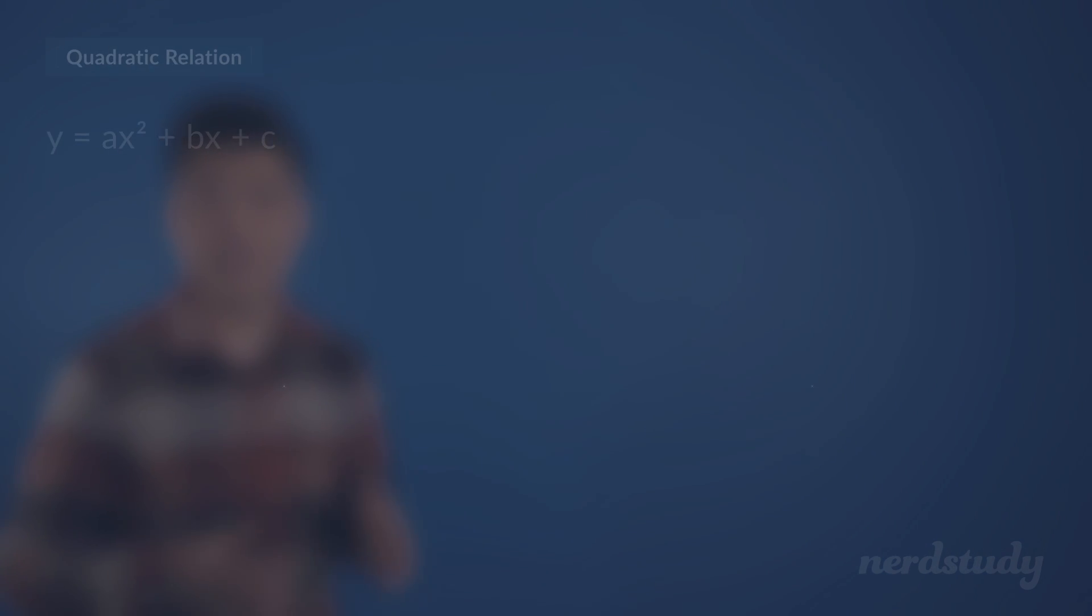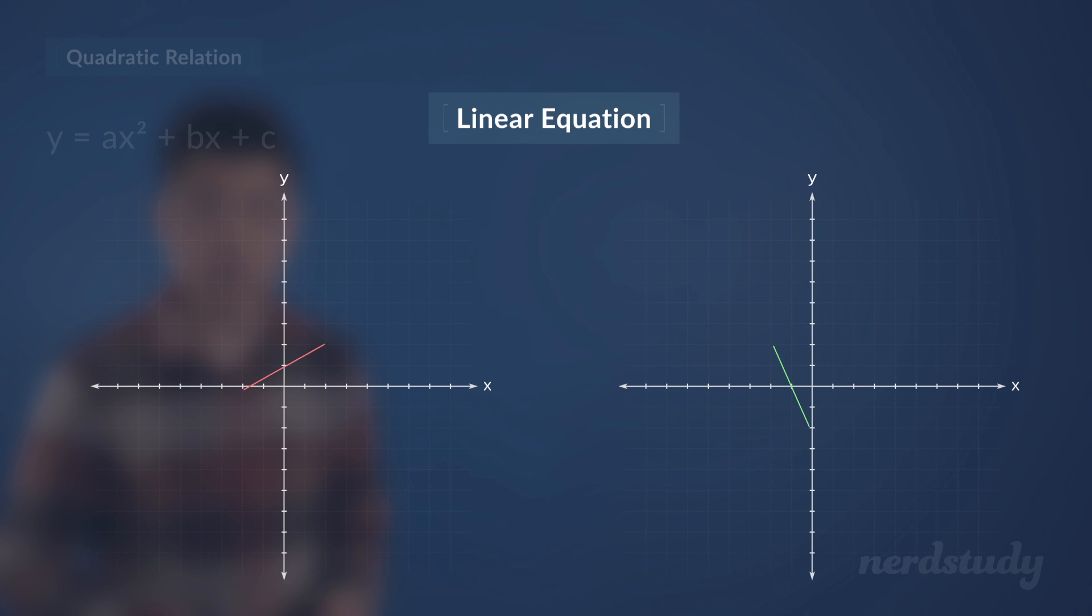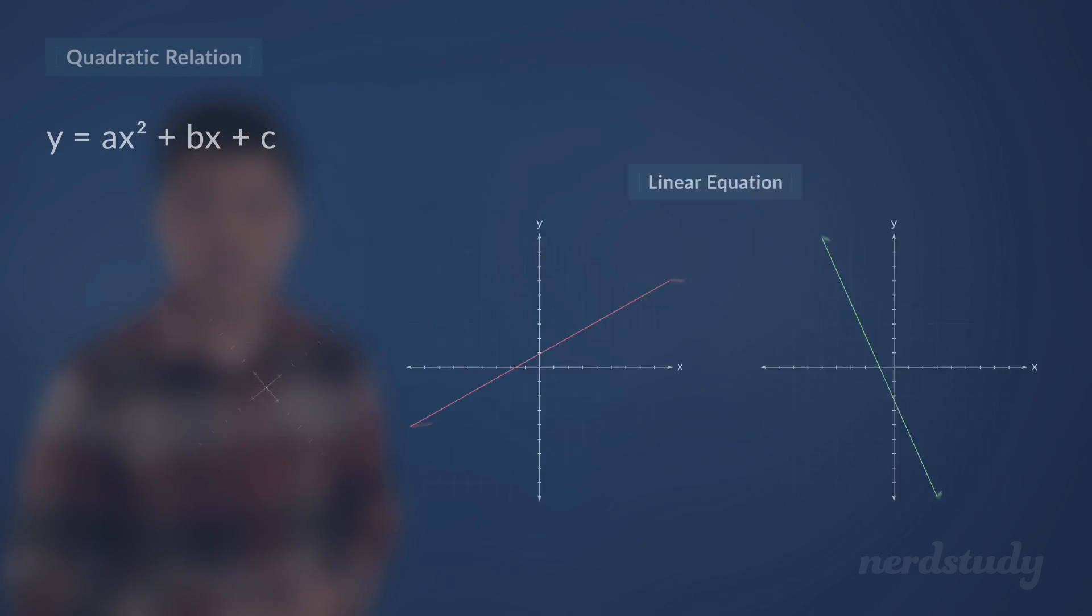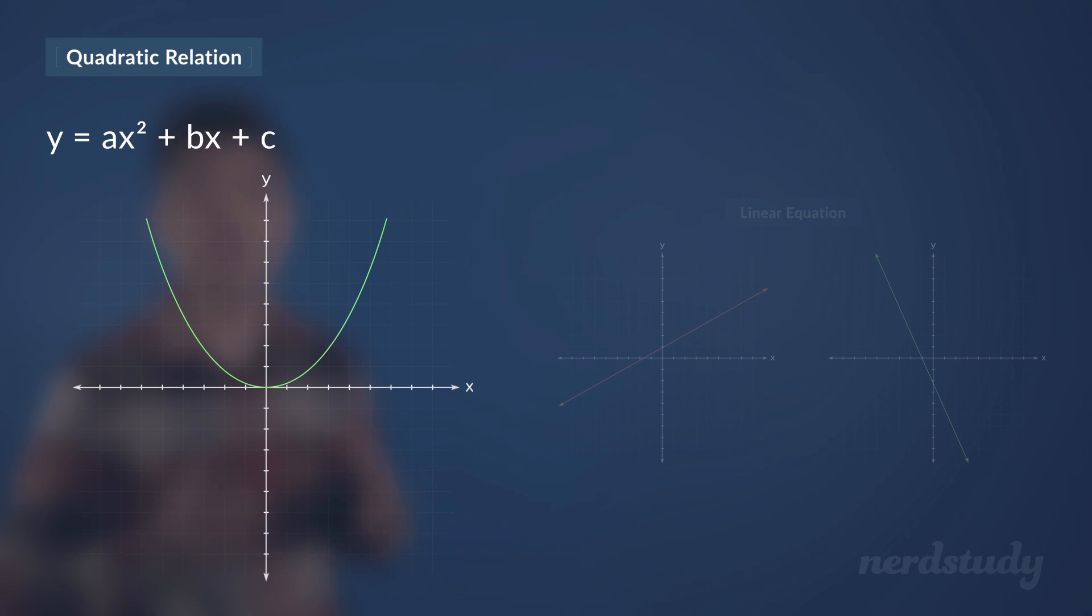Whereas you can expect linear graphs to look like these ones right over here, you can expect quadratic relations to look more like a u.